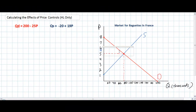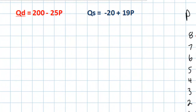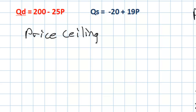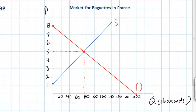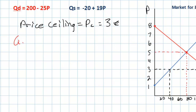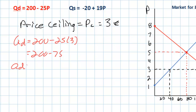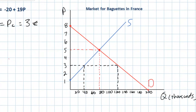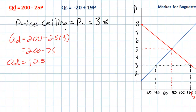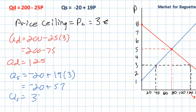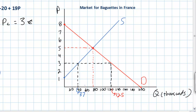Let's continue by examining the effect of a price ceiling in the market for baguettes. A price ceiling is a maximum price above which the price of baguettes would not be allowed to rise. We'll set a price ceiling at 3 euros per baguette on the graph. The quantity demanded at 3 euros: Qd equals 200 minus 25 times 3, which is 200 minus 75, giving 125 baguettes. The quantity supplied: Qs equals negative 20 plus 19 times 3, which is negative 20 plus 57, giving only 37 baguettes supplied.